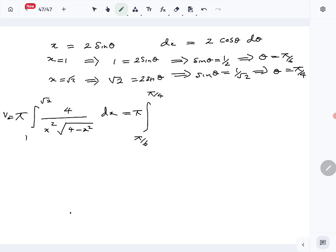For 1 I can put π over 6, the new upper limit is π over 4. You have π outside, 4 on top. For x squared I can put 4 sine squared theta, and here I can put 4 sine squared theta again, and for dx I can put 2 cosine theta d theta.